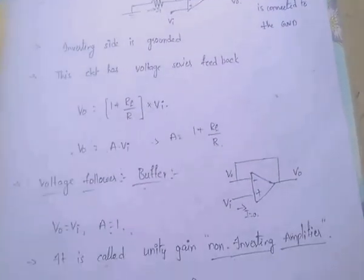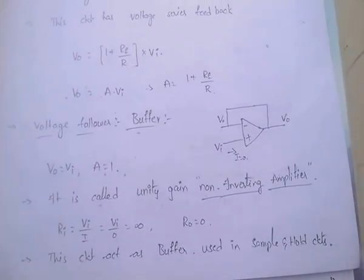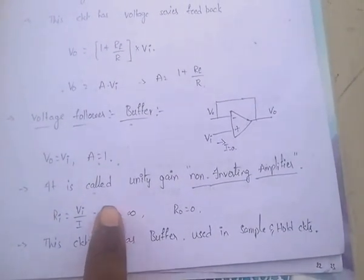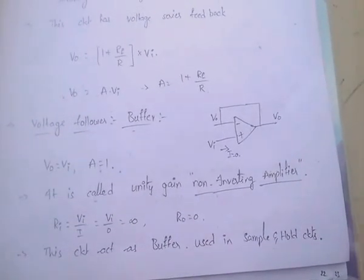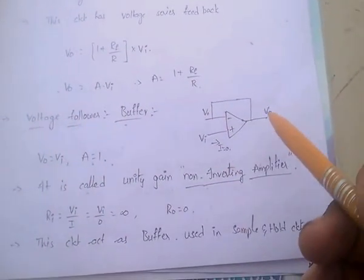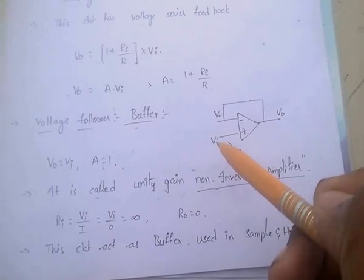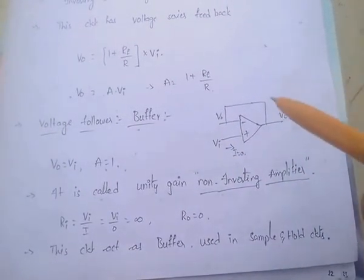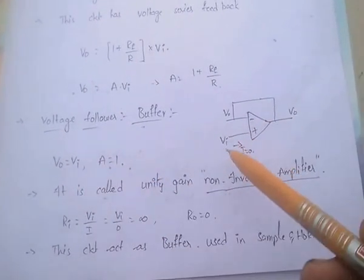Next: voltage follower or voltage buffer — also very, very important. Voltage follower means the output is followed by the input voltage. That is, V0 equals Vi.